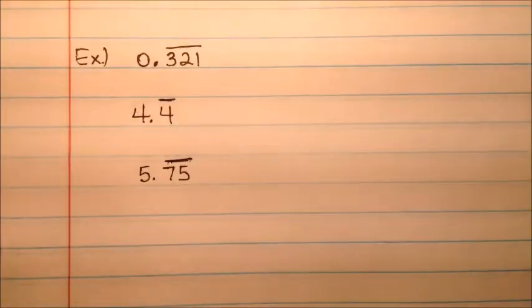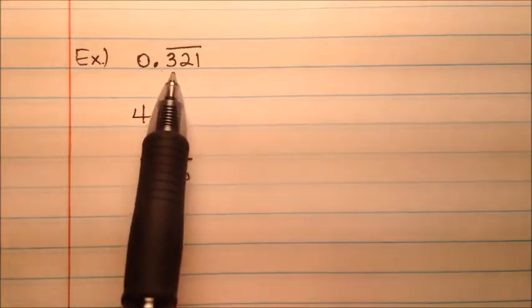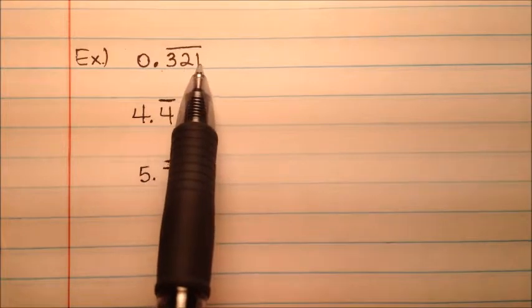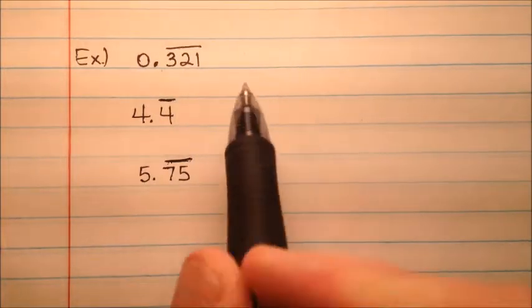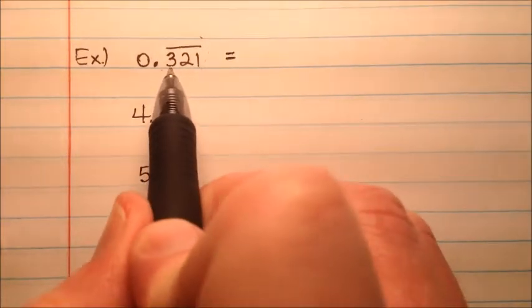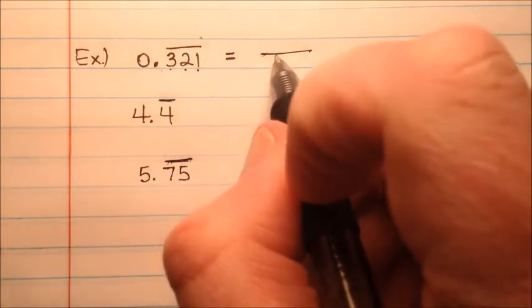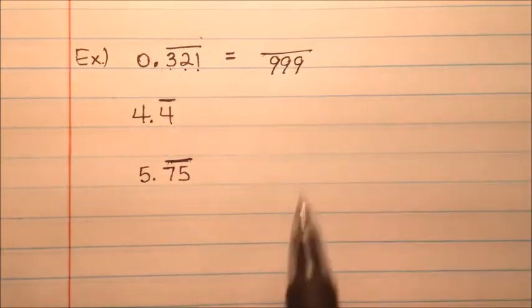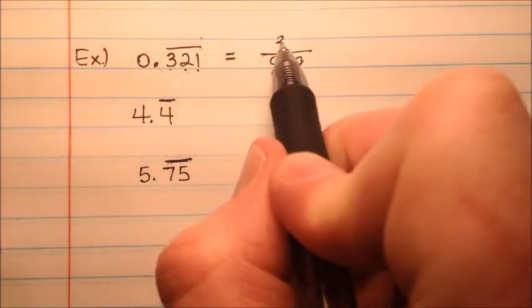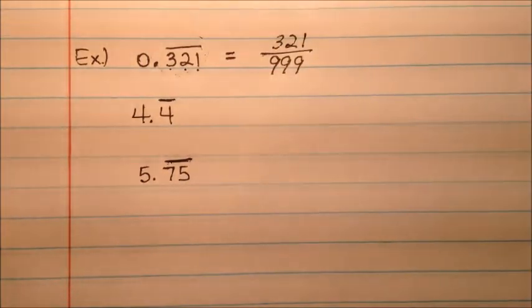Let's now look at three more examples. In this first, we have 0.321 and the 3, 2, and 1 are all repeating. So it'll be 0.321321321, forever and ever. How can we take this and make this into a fraction? Well, we have 1, 2, 3 digits that are repeating. So I'm going to put that over 1, 2, 3 nines. And the digits that are actually repeating are 3, 2, and 1, so I'll put 321 over 999.